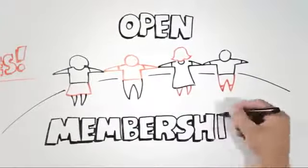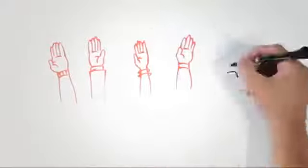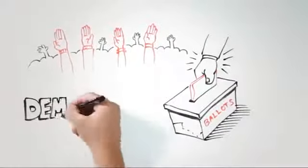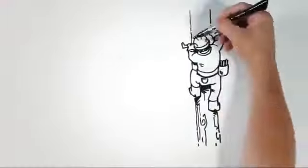Members vote for the directors to lead their co-op. They vote yay or nay on big issues. Majority rules. That's the principle of democratic member control. Everyone pays a little money to become a member, an owner. We call that principle participating economically.